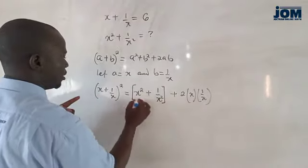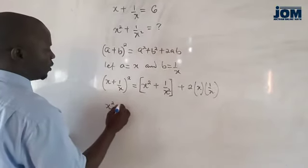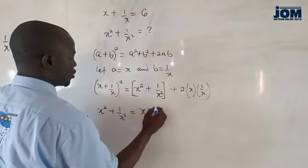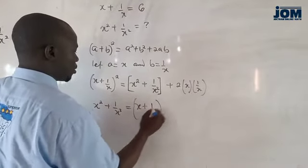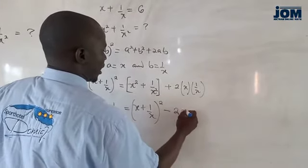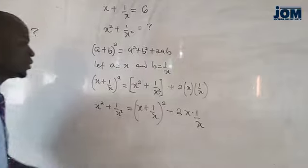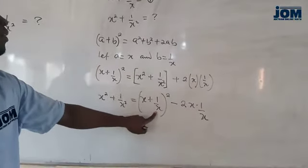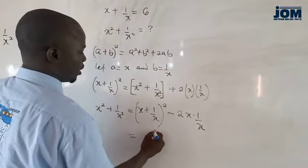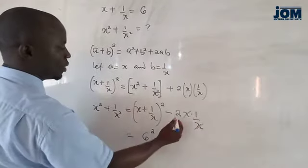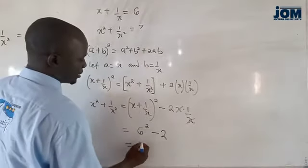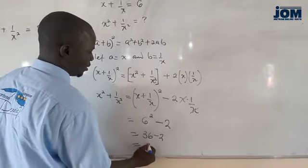We are after this. Let's make it the subject. x squared plus 1 all over x all squared is now equal to x plus 1 over x all squared. We bring this to the left-hand side becomes minus 2x multiplied by 1 over x. But the value of x plus 1 over x is 6 from the equation. This becomes 6 squared minus x and x goes, 2 times 1 is 2. And 6 squared is 36 minus 2 will have 34.